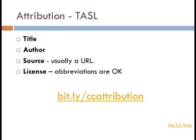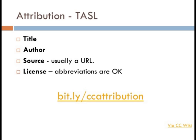Best practices for attribution in video: include that information in the credits just like you would see in a feature film, and if you're publishing something online, include it in text form there with a link back to the place where it's shared — in the description of the video on Vimeo or wherever you've published it. If you're not sure how the licensor would like to be credited, ask them. And ask them — don't ask us. What really matters is that the license is an agreement between the licensor and licensees, so just reach out to people. It doesn't cost anything.